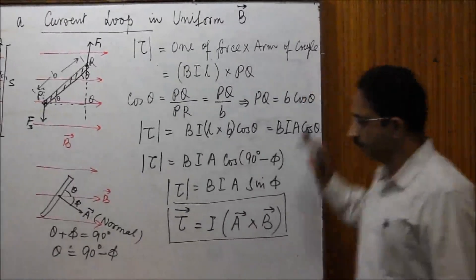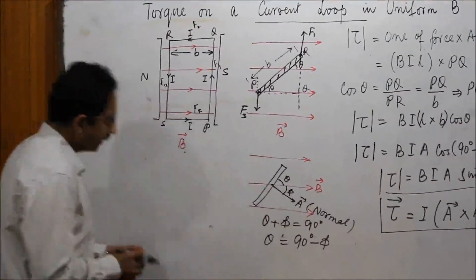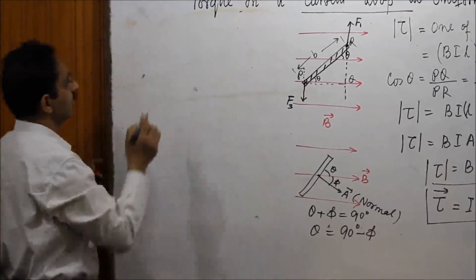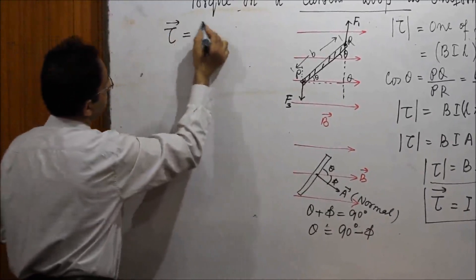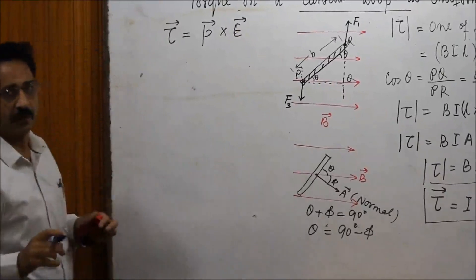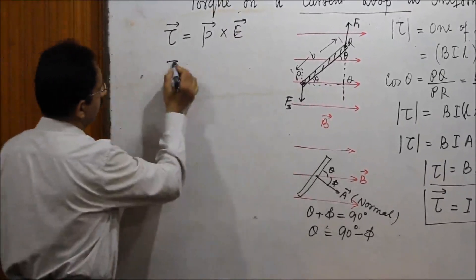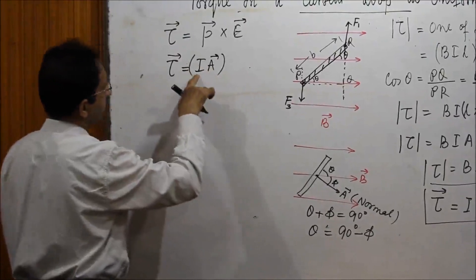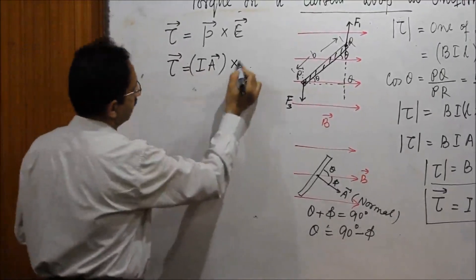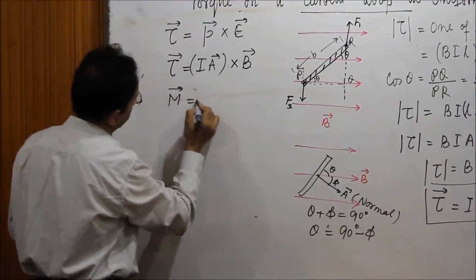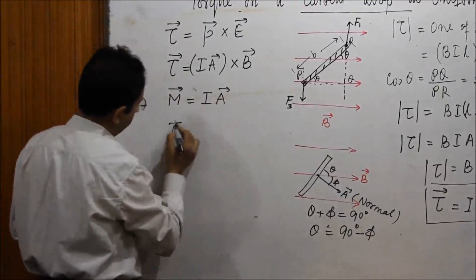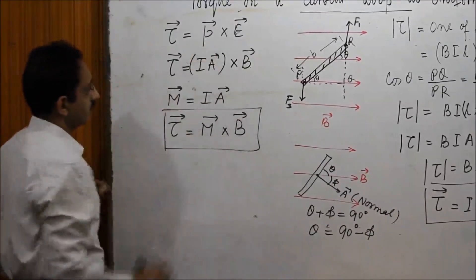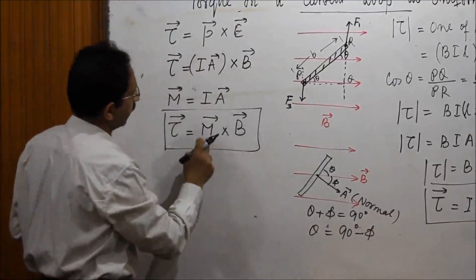From this, we deduce a very important quantity called the magnetic dipole moment, or simply magnetic moment, denoted by M, defined as M = IA (current times area vector). The torque equation becomes τ = M × B. This is analogous to the electrostatic formula τ = P × E for an electric dipole in an electric field — here we have magnetic dipole moment instead of electric dipole moment, and magnetic field instead of electric field. This equation finds utility in devices like the moving coil galvanometer.